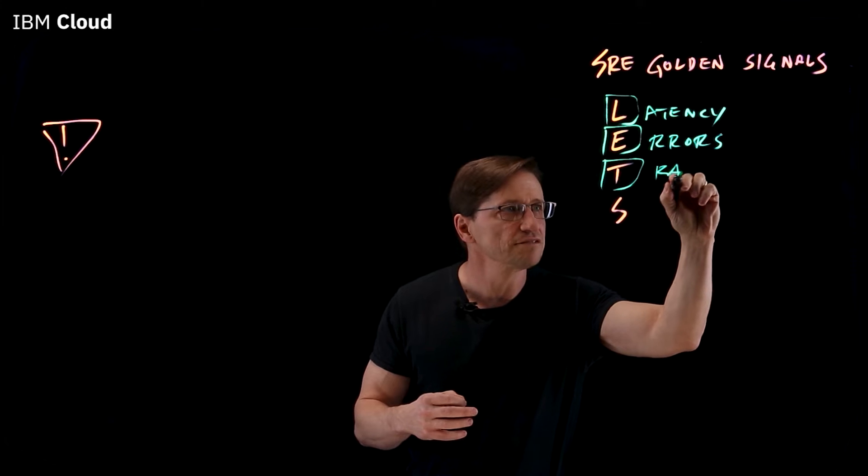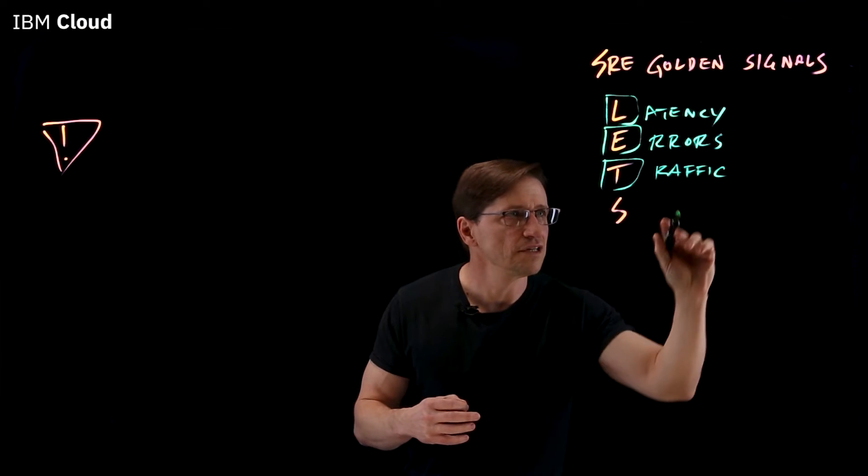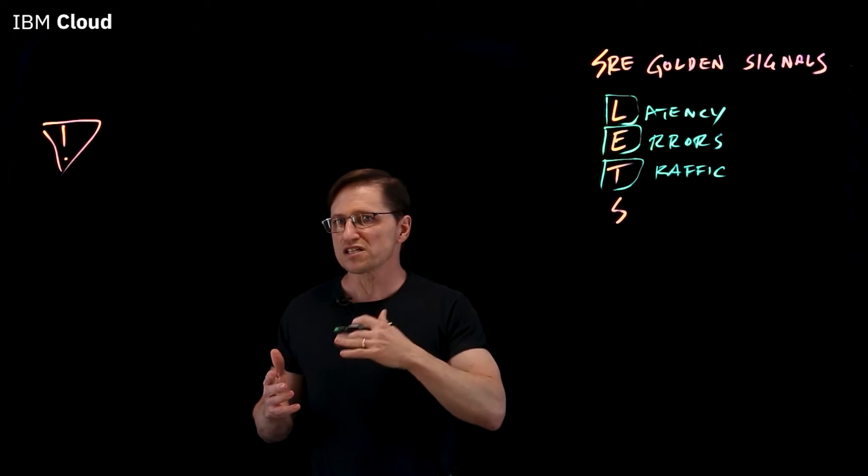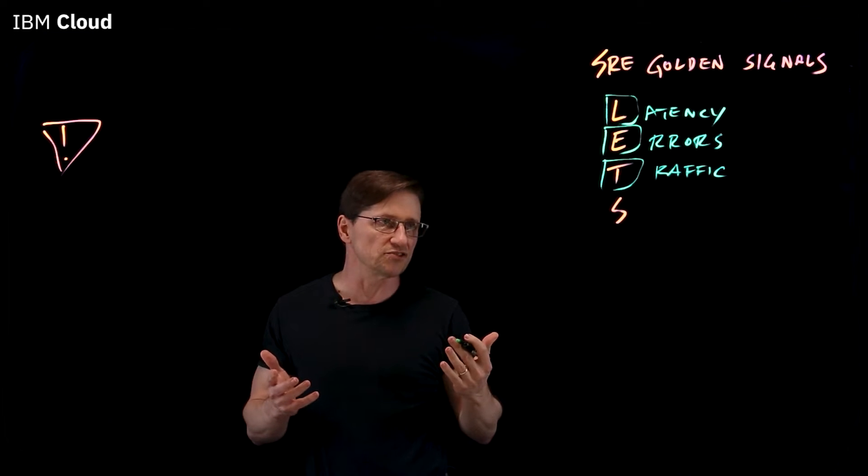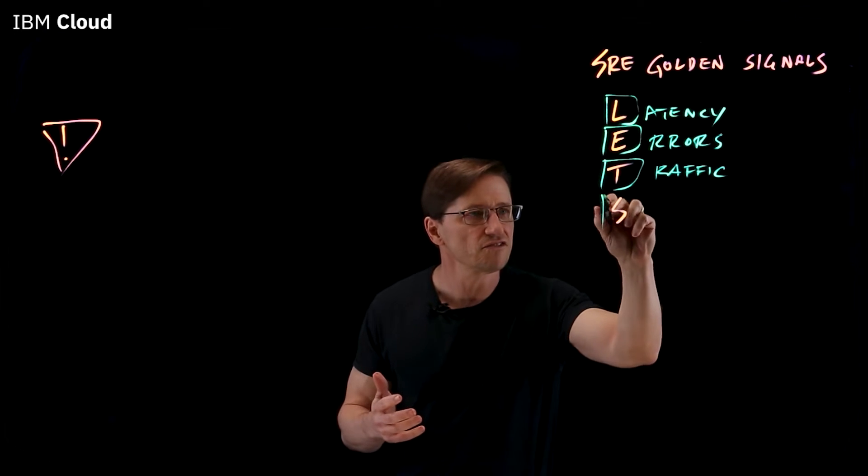T is for traffic. Traffic refers to the amount of requests coming in versus your expectations. And finally, S for saturation.